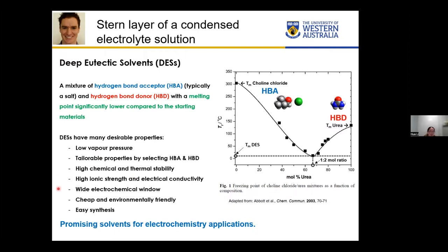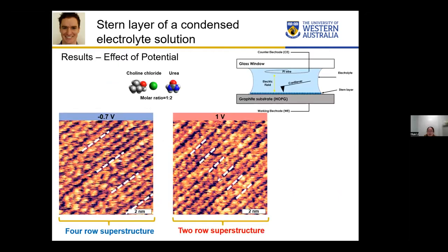DES is therefore very promising for electrochemistry applications. In this study, we modified the AFM liquid cell to apply a potential between the solid substrate — a graphite surface — and a platinum wire in the electrolyte. From the obtained AFM images, we can see that at negative potentials a four-row superstructure has been detected, and at positive potentials a two-row superstructure appears. This means the stern layer composition and structure differ at different surface charges.